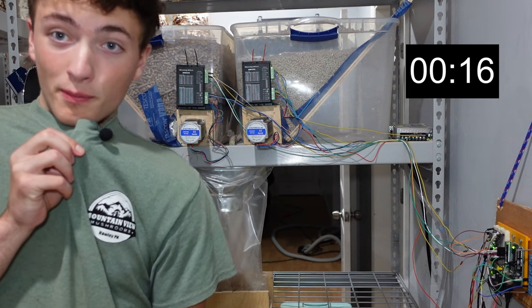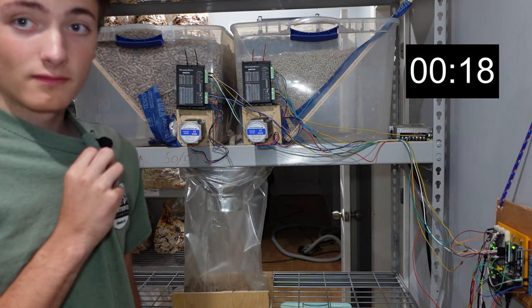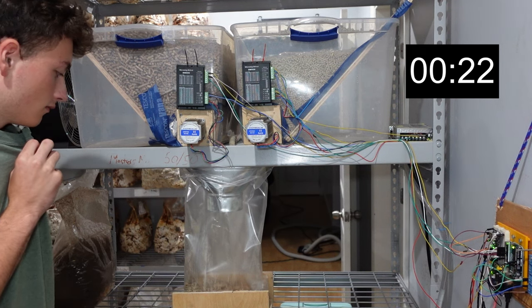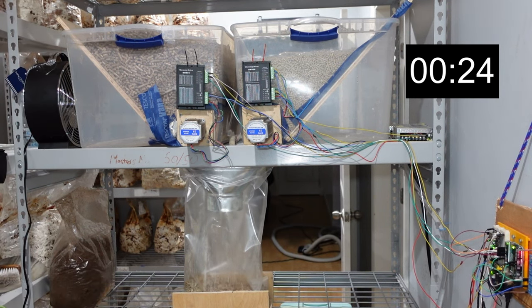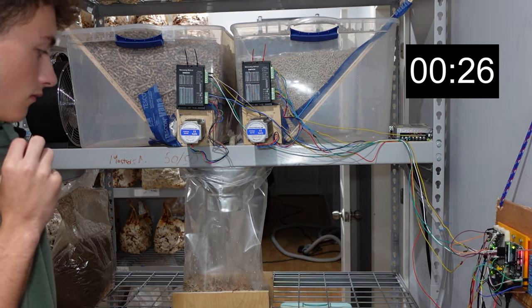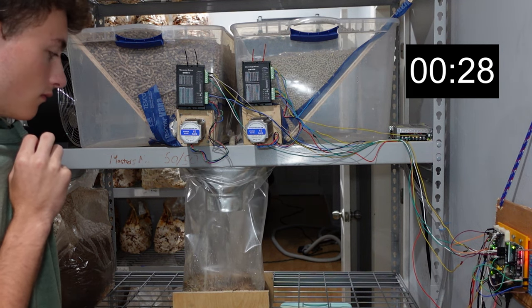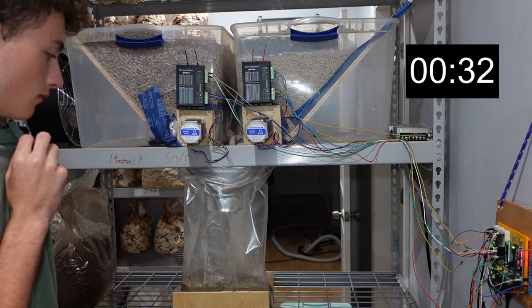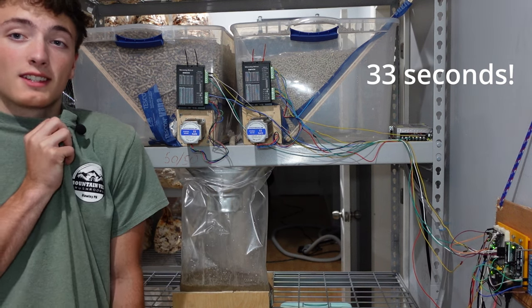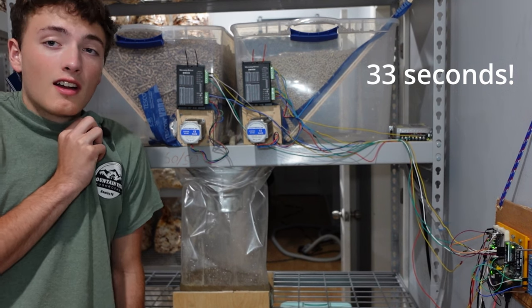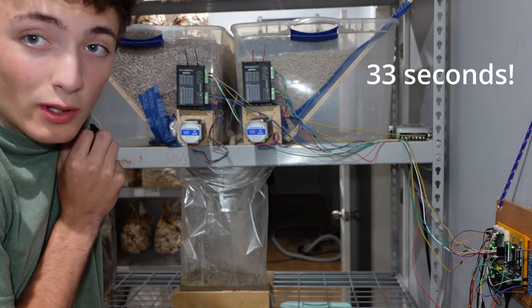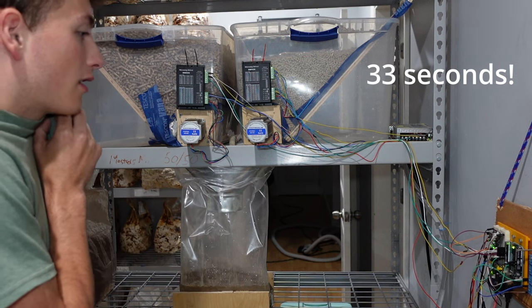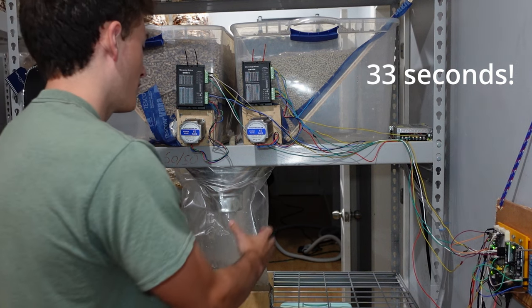This will then kick on both motors and give us exactly a 10-pound block, half and half of soy hull and hardwood, and then a total of 6 pounds of water for a 10-pound block, and we're done.